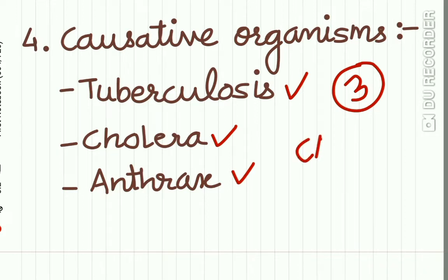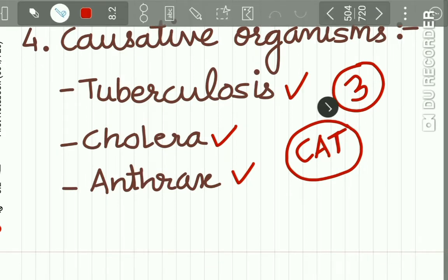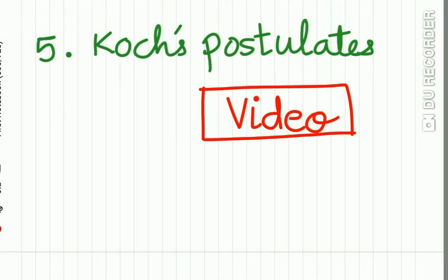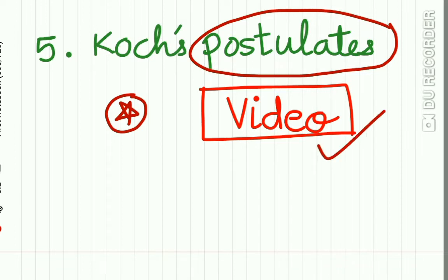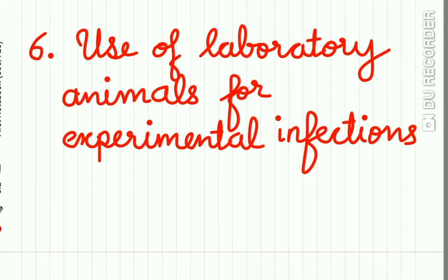These three organisms — tuberculosis, cholera, and anthrax — were identified by Robert Koch. Fifth, Robert Koch proposed Koch's postulates, which are very important and will definitely be asked in your exams. We have already uploaded a lecture on Koch's postulates, so watch that lecture carefully.